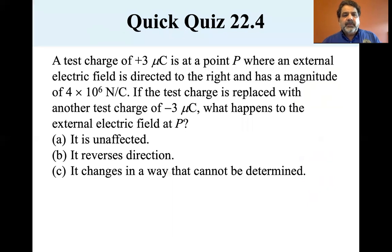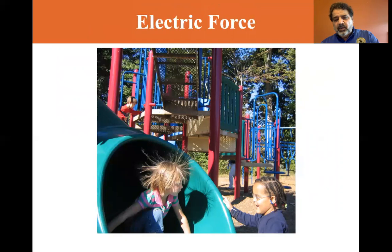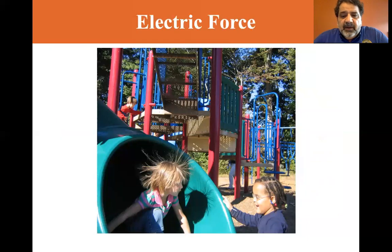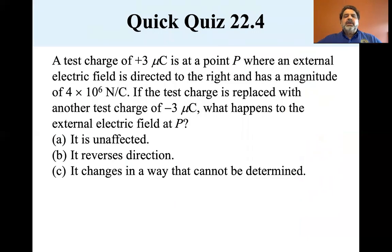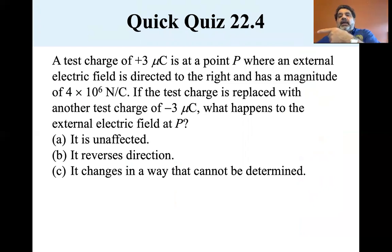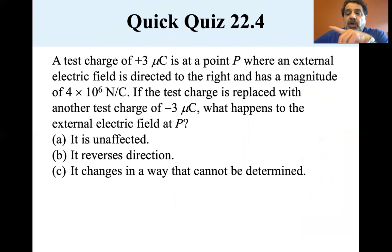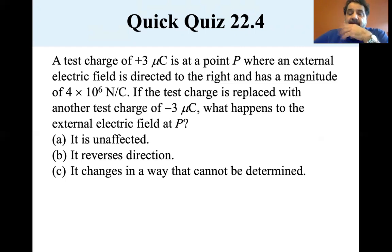Example problem: A test charge of +3 microcoulombs is at point P, where an external electric field is directed to the right with a magnitude of 4×10⁶ N/C. If the test charge is replaced with a charge of −3 microcoulombs, what happens to the external electric field at point P? Options: it is unaffected, it reverses direction, or it changes in a way that cannot be determined.